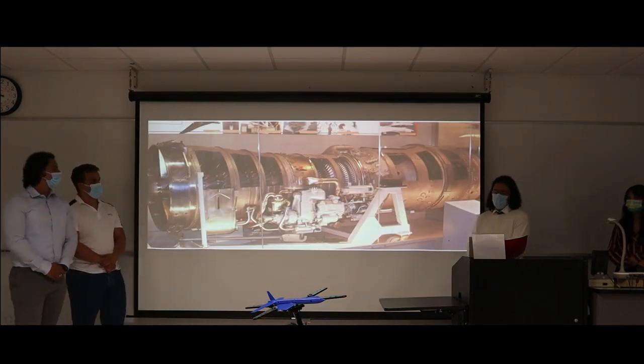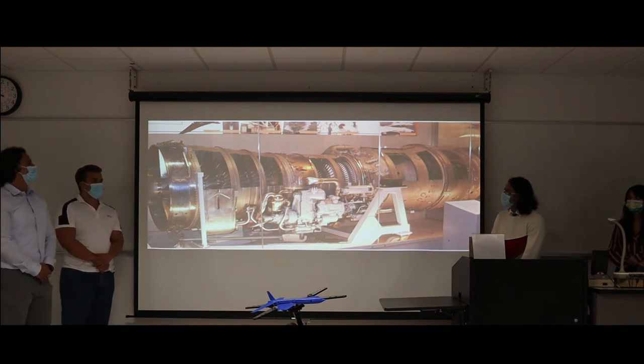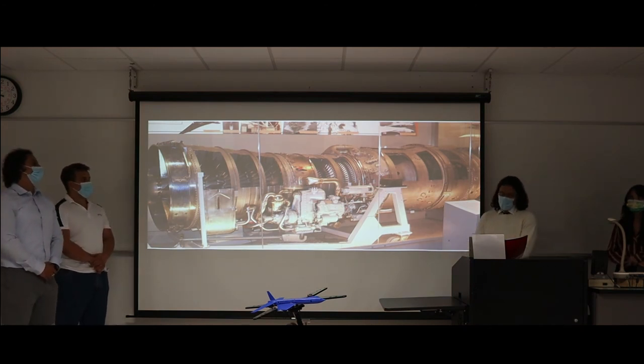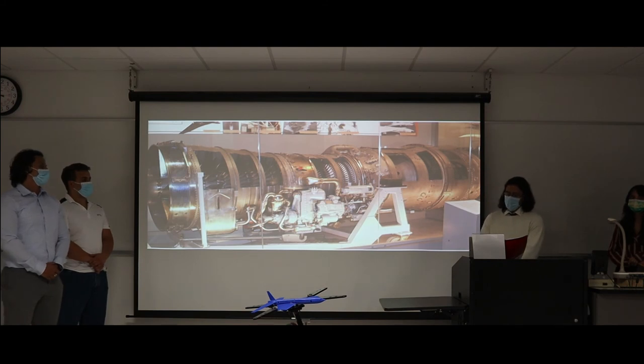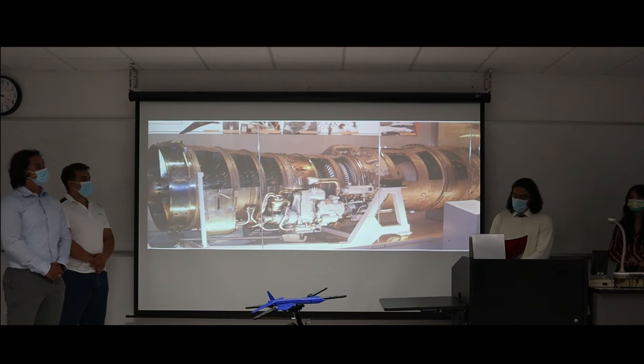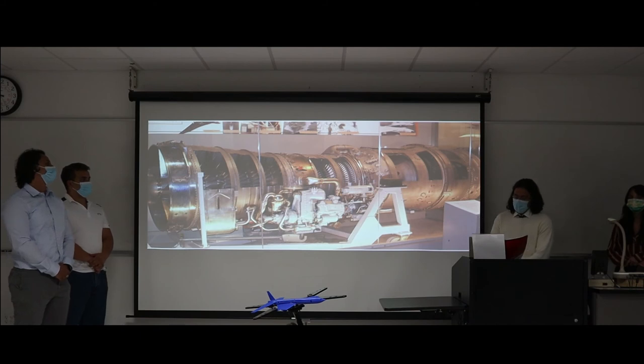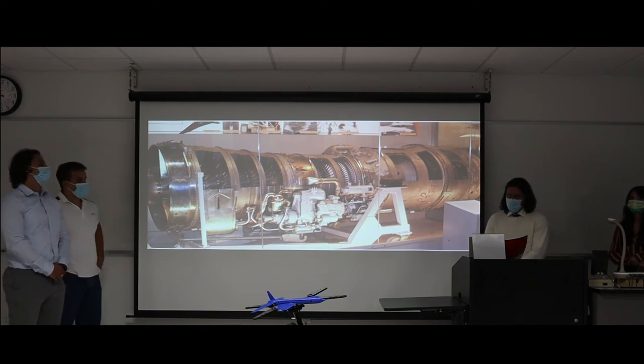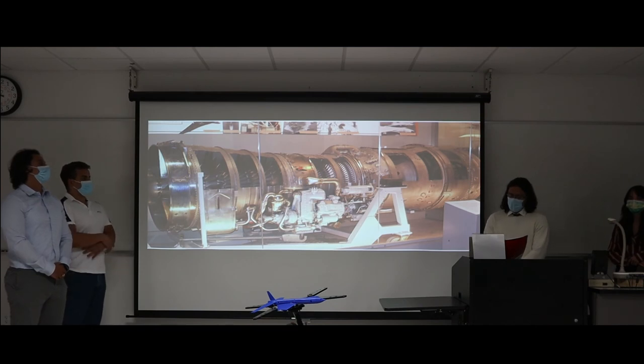For the propulsion system, we chose to go with the Olympus 593 as pictured behind me. The Olympus 593 is a turbojet engine. This type of engine is optimal for the speed that we need, and it was actually the same type of engine that the Concorde used. We chose to go with four total engines, and this engine has a max thrust of 162 kilonewtons. We needed this thrust amount for our required range, takeoff, and landing requirements.